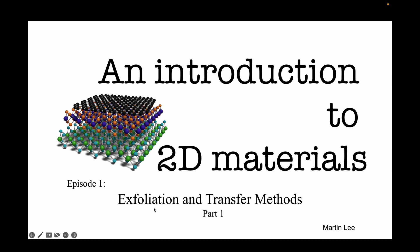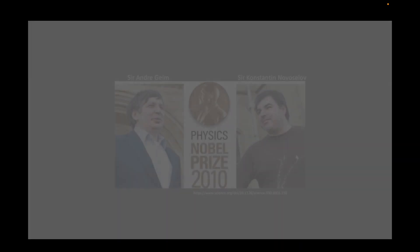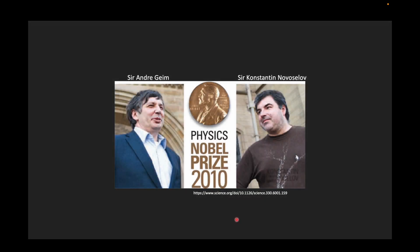In the first episode, I'm discussing the basics of exfoliation and transfer methods. For those of you who are not aware, the field of 2D materials started in the University of Manchester in 2004 and 2005, when Konstantin Novoselov and Andre Geim started experimenting with the mechanical exfoliation of graphite into its monolayer form, graphene, by using a normal piece of tape.